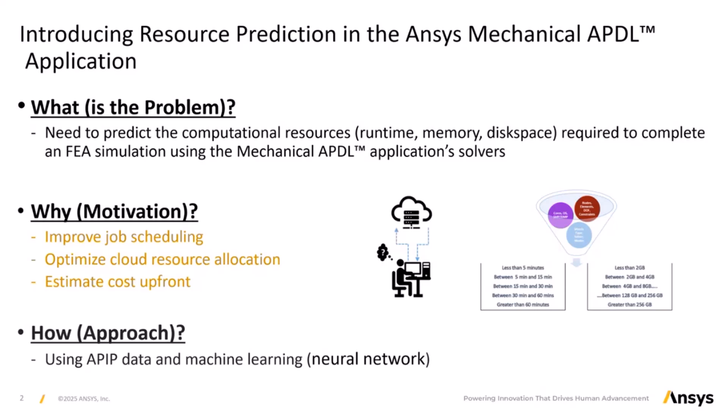This feature operates using data from the ANSYS product improvement program, known as APIP, and uses neural network machine learning. The resource prediction tool analyzes data from a vast array of previous simulations to deliver accurate estimations for new analyses.